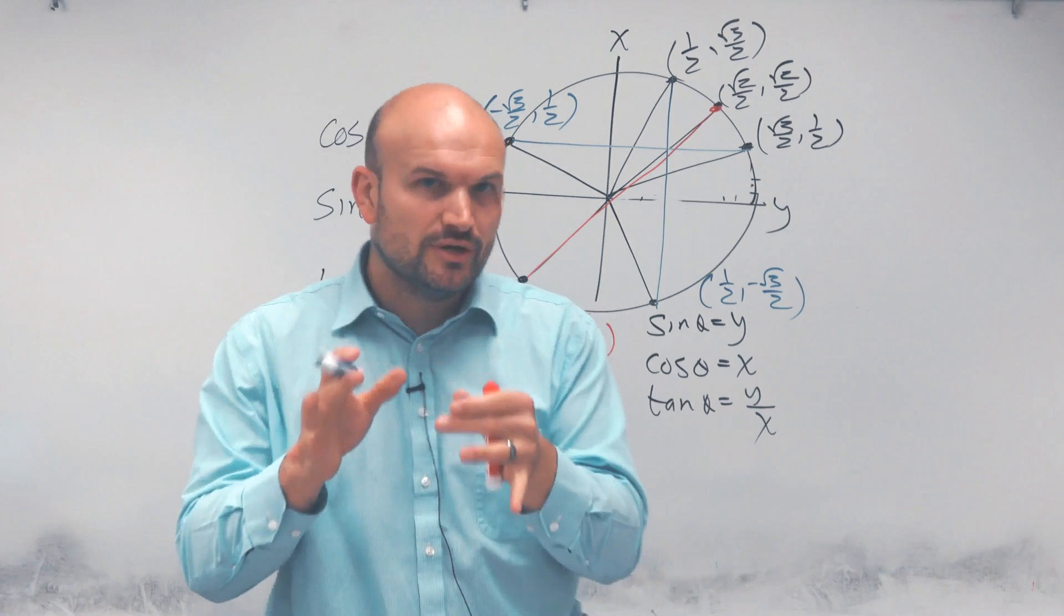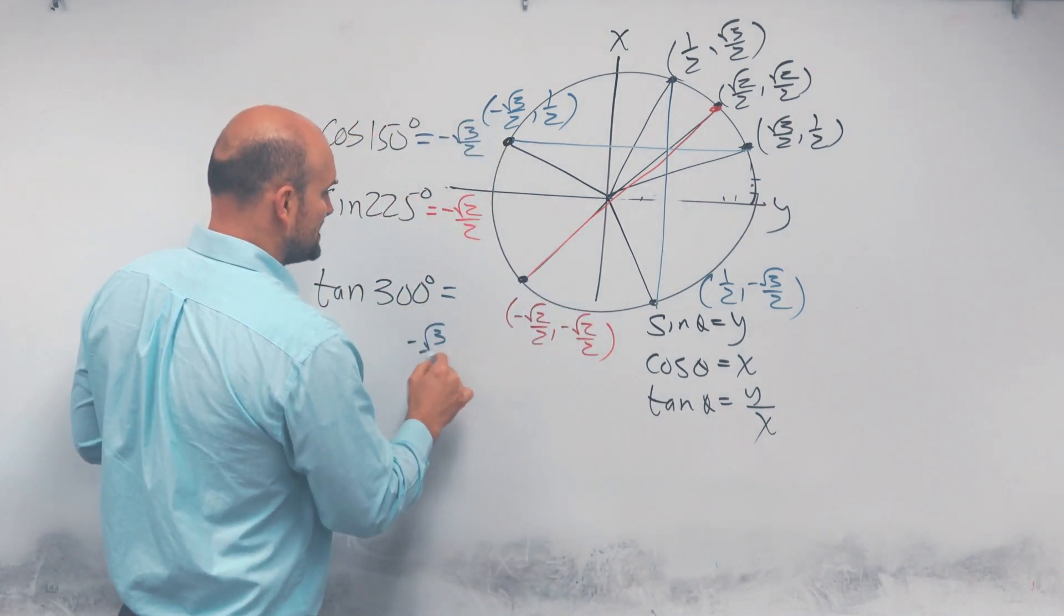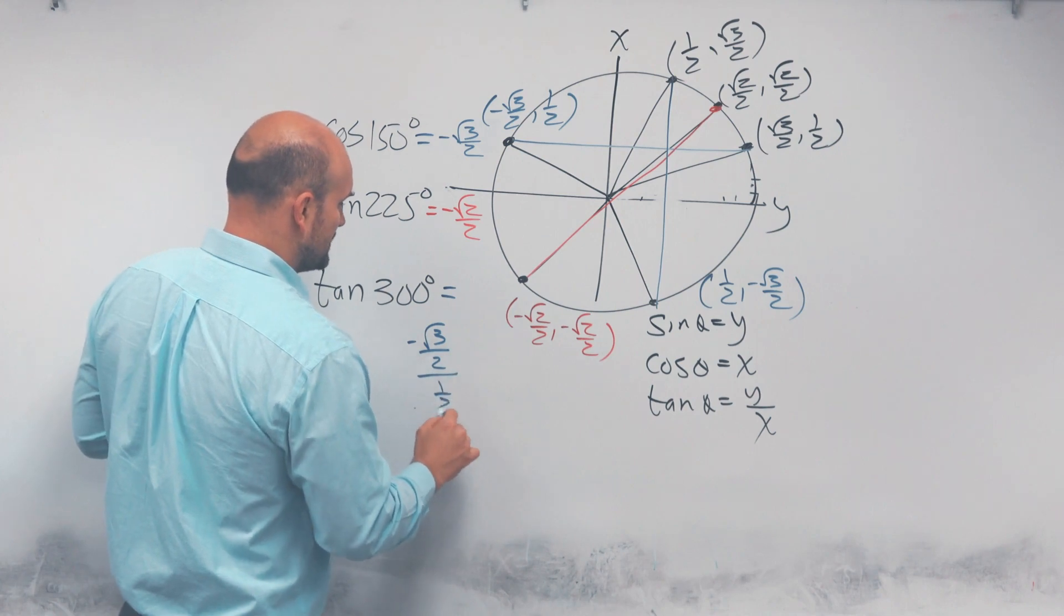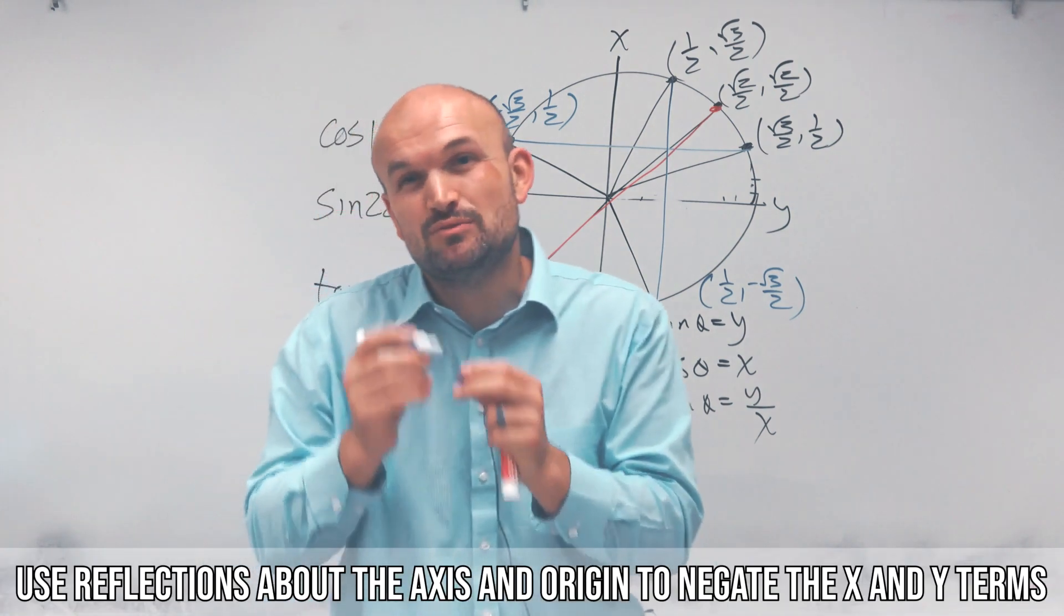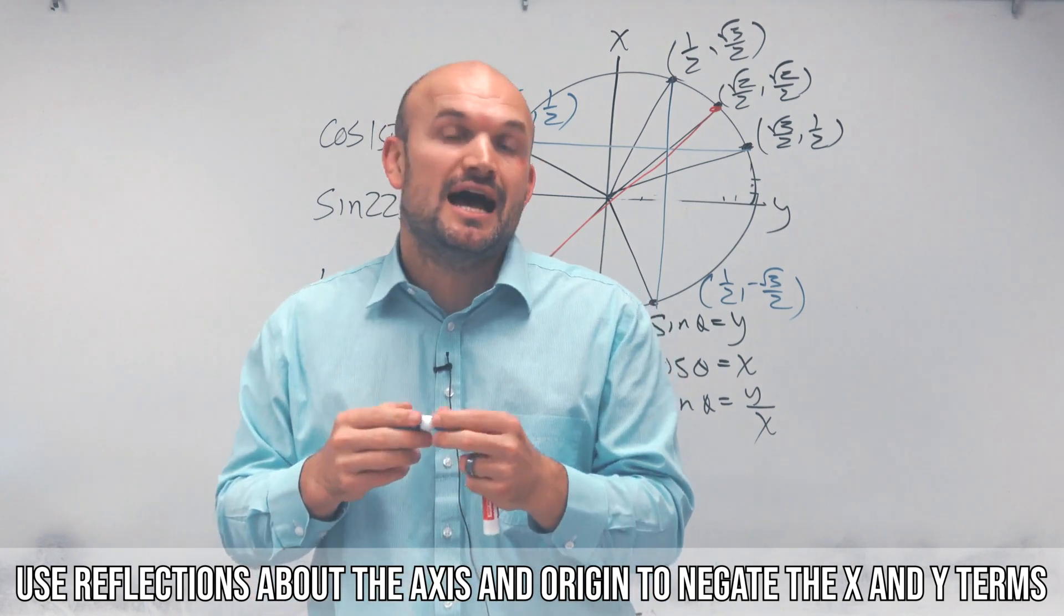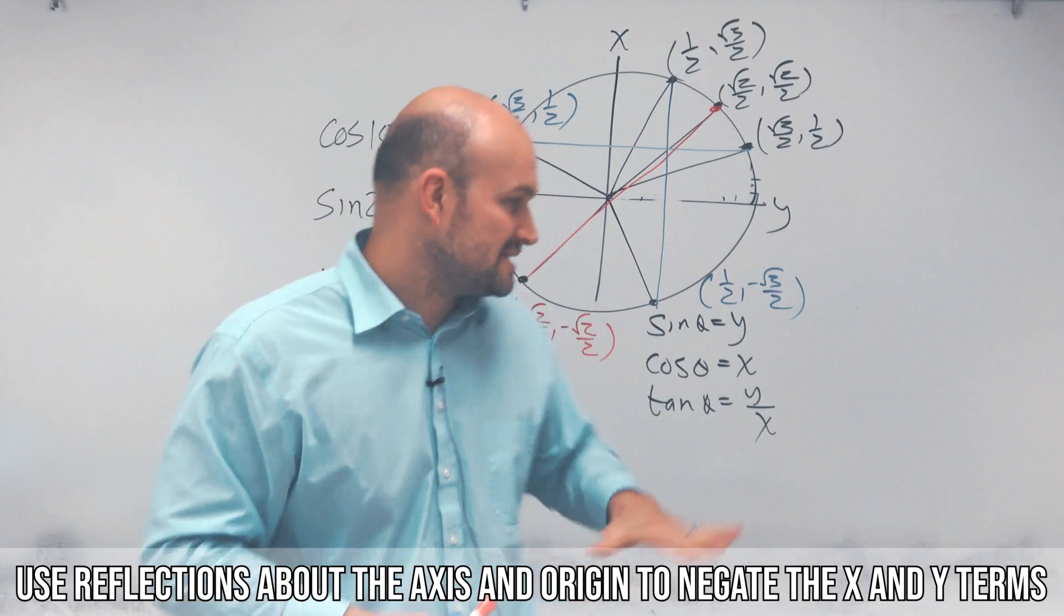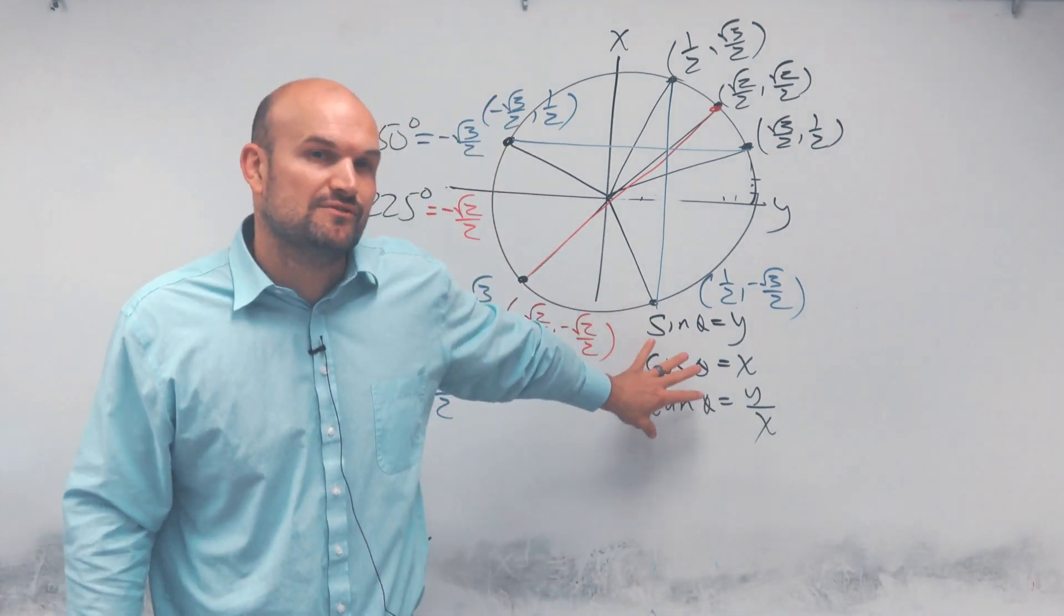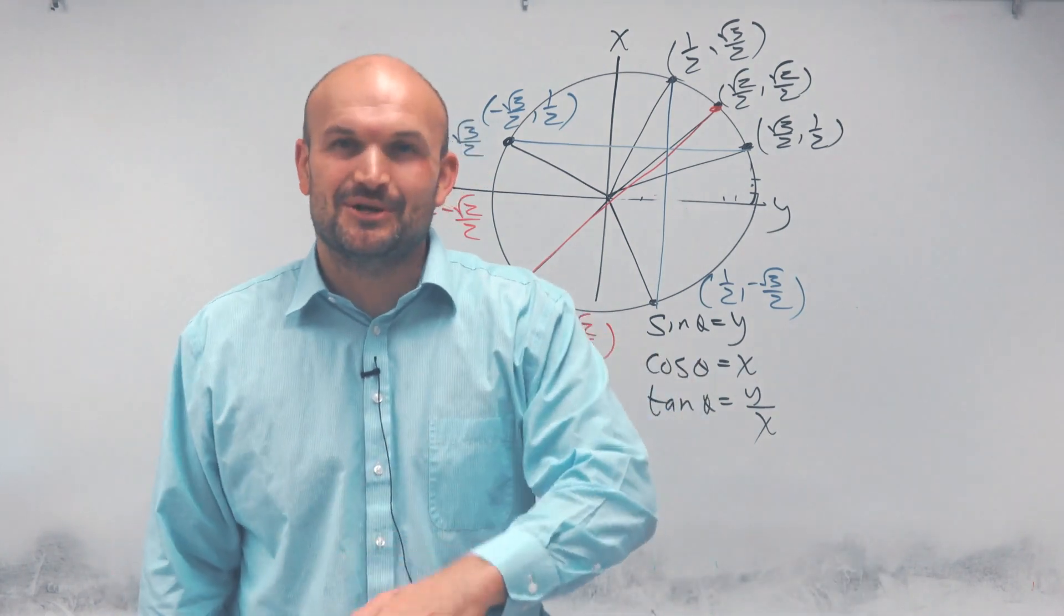So the important thing is if you can understand how to graph your coordinate points and make sure that you understand the points in the first quadrant, then what you can do is you can easily use reflections about the y-axis as well as the origin to just negate the x and y terms. And as long as you understand your definitions of trigonometric functions, you can quickly evaluate the trigonometric functions using the unit circle.